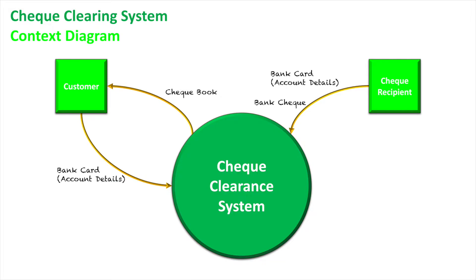The bank processes the check. In order to process it, they need to know the account of the person submitting the check, so they can link the bank check and the funds being given to the recipient's account. The recipient then gets a receipt of the transaction — for example, stating $300 is going to go into their account. Usually that is not immediate because this is a batch system, but a receipt is still given at this time as proof that they have submitted the check, although the batch process takes place at a later date.